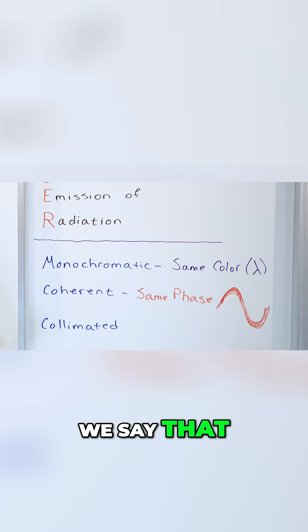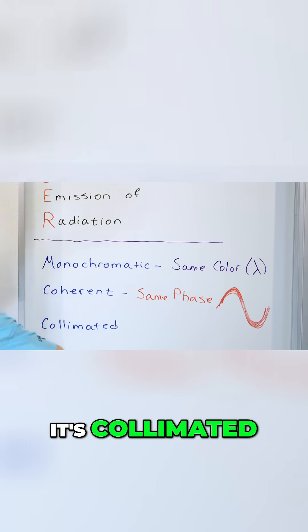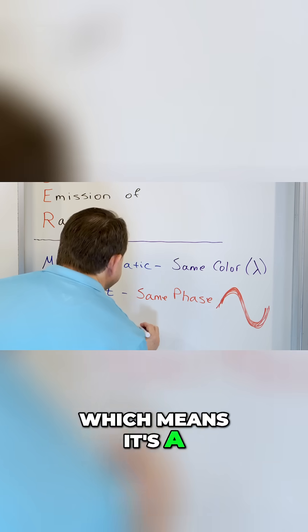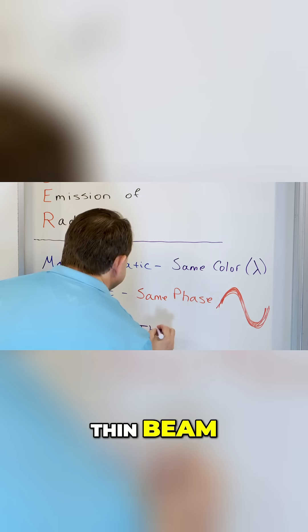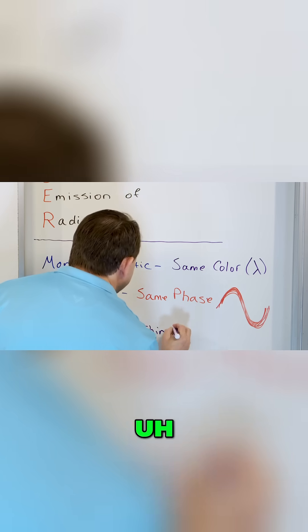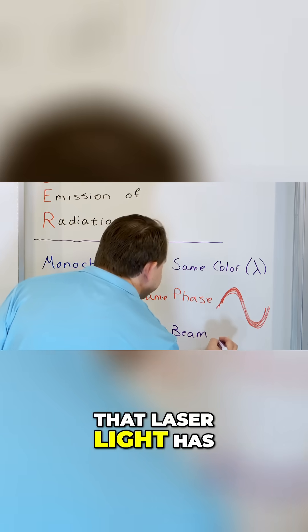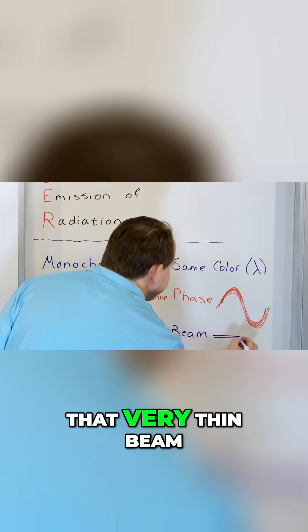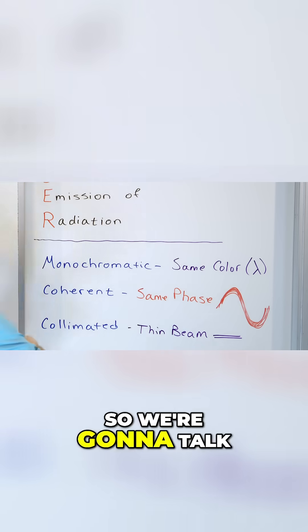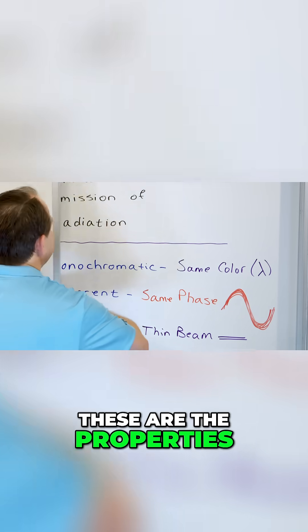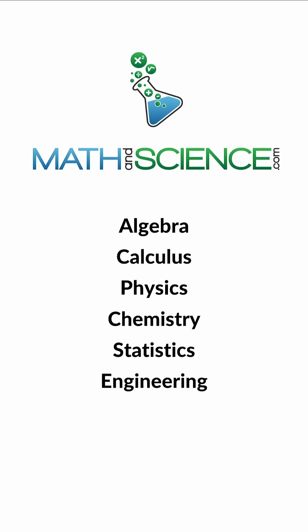Next, we say that it's collimated, which means it's a thin beam. You all know that laser light has that very thin beam. So we're going to talk about all of that. These are the properties of a laser.